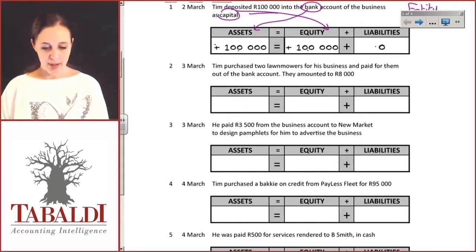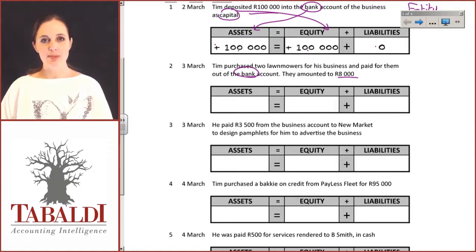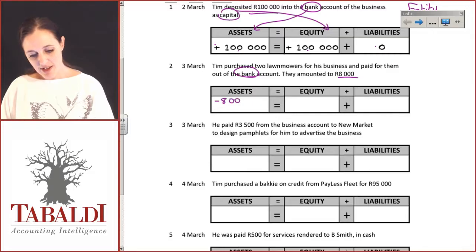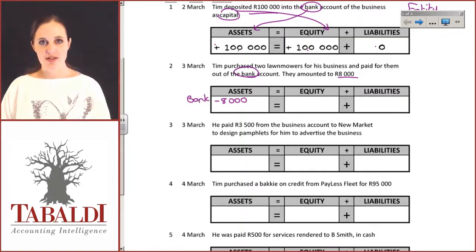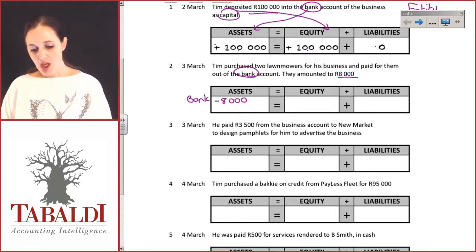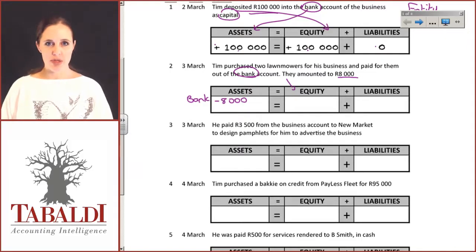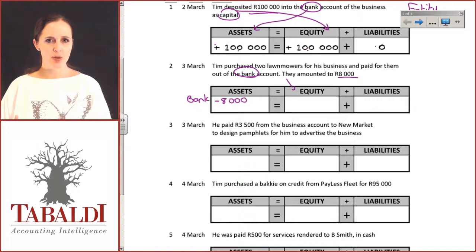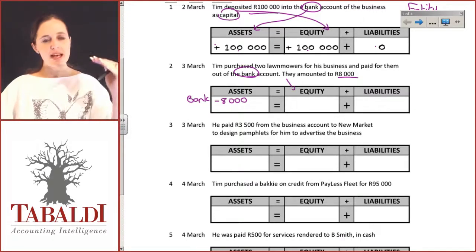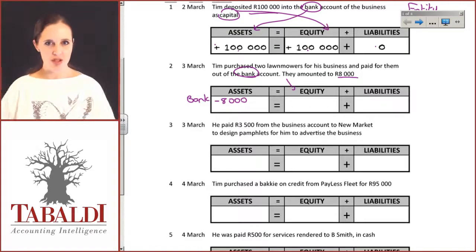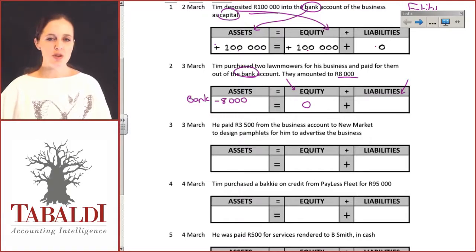Tim purchased two lawnmowers for his business and paid R8,000 out of the bank account. The business bank account has dropped by R8,000, reducing assets. But what is the other side? Has this changed Tim's equity — his share of the business? No. The business doesn't owe anything new. And there's no future outflow, no present obligation, so liabilities are zero.